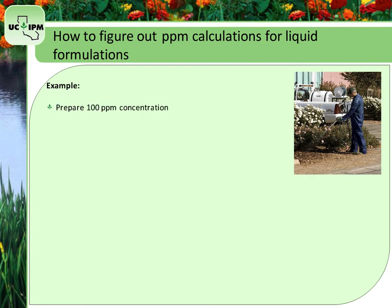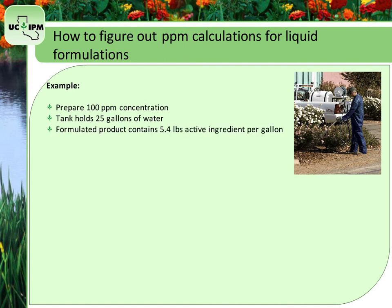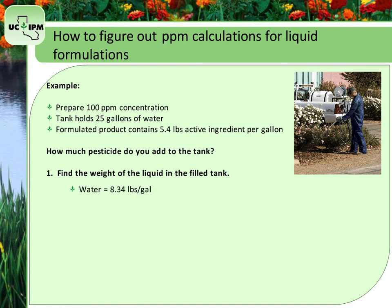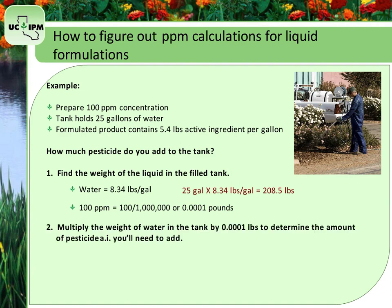Now let's say you need to prepare a 100 parts per million concentration of a pesticide active ingredient in a 25-gallon tank. The label states there is 5.4 pounds of active ingredient per gallon of product. First, find the total weight of liquid in the tank: 25 gallons times 8.34 pounds per gallon equals 208.5 pounds per tank. 100 parts per million, or 100 divided by 1,000,000, equals 0.0001 pounds of active ingredient per pound of solution. Multiply 208.5 pounds by 0.0001 to get 0.021 pounds of active ingredient needed per tank.